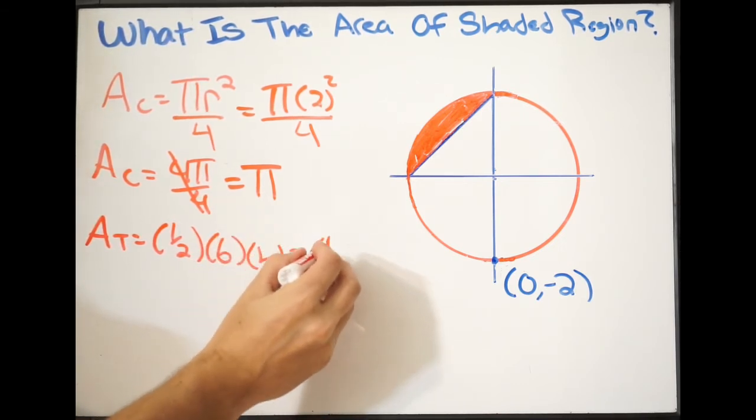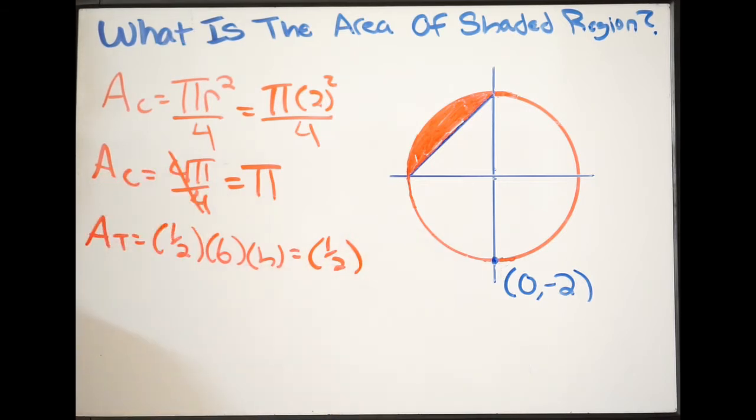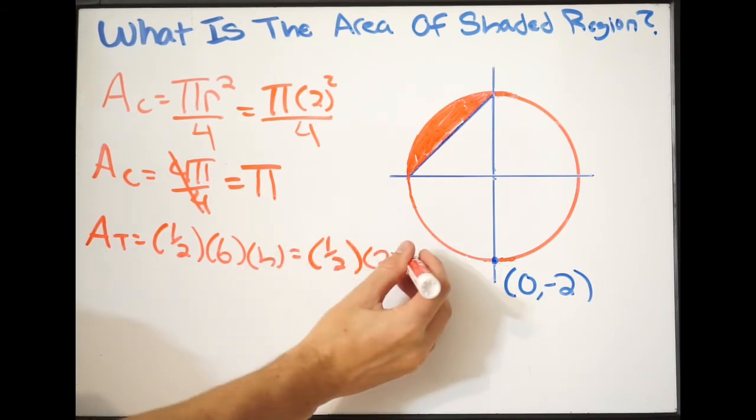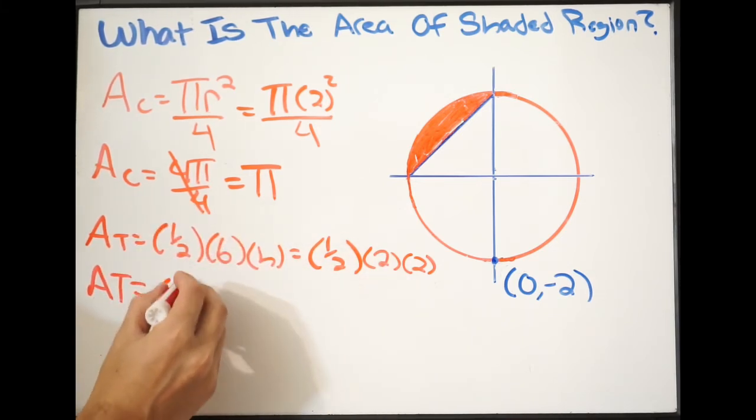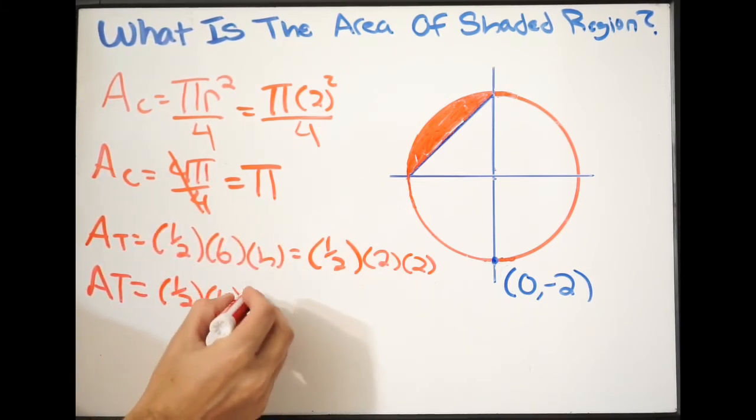Area of triangle is going to be 1 half base times height. And in our case, it's going to be 1 half. Again, my base here is my radius, so it's going to be 2. My height is also my radius, so it's going to be 2 as well. So area of triangle is going to be, in our case here, we get 1 half times 4, which is just going to give us 2.